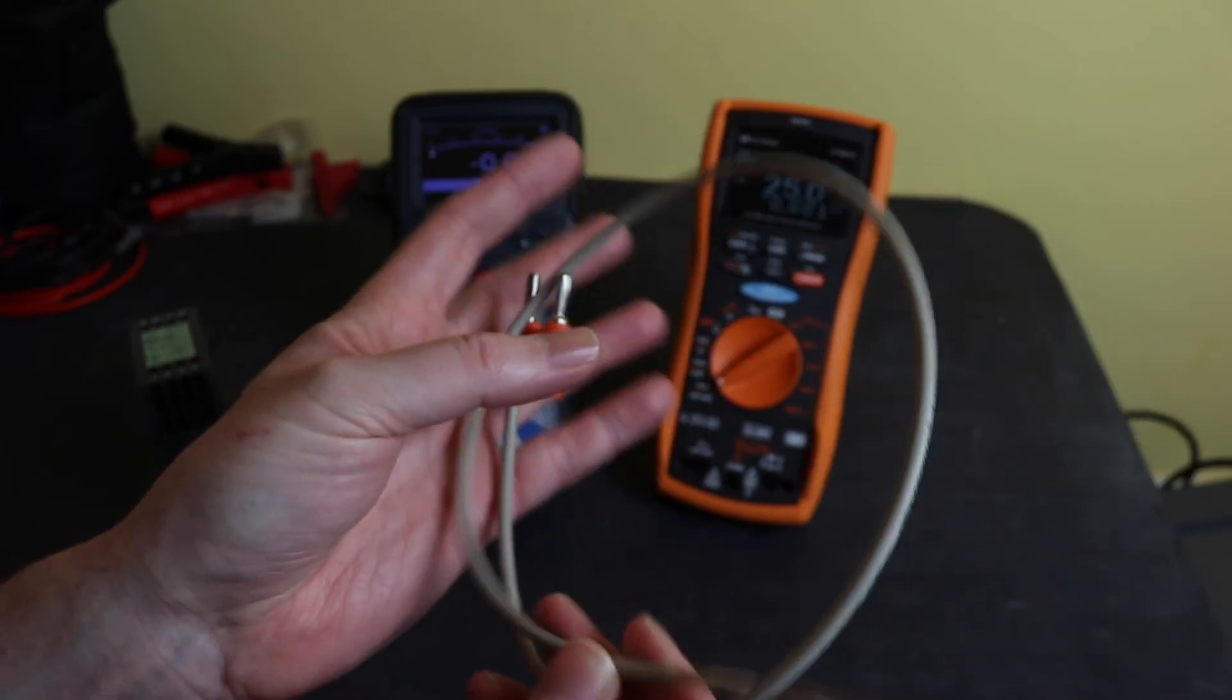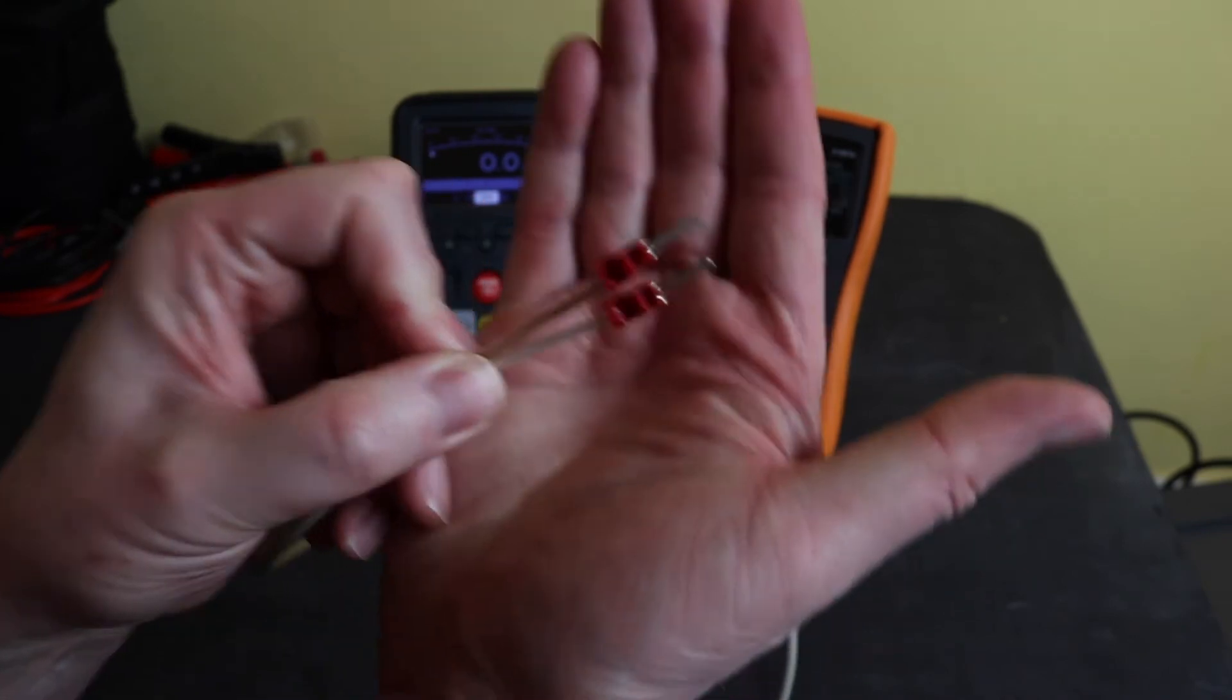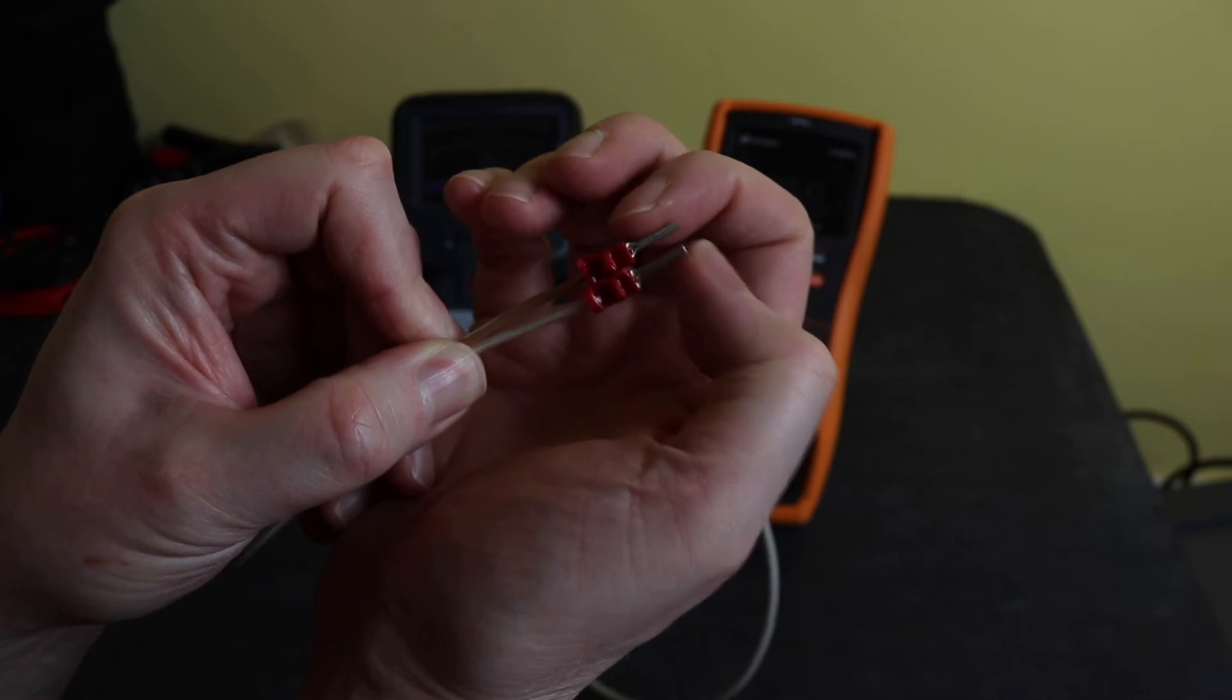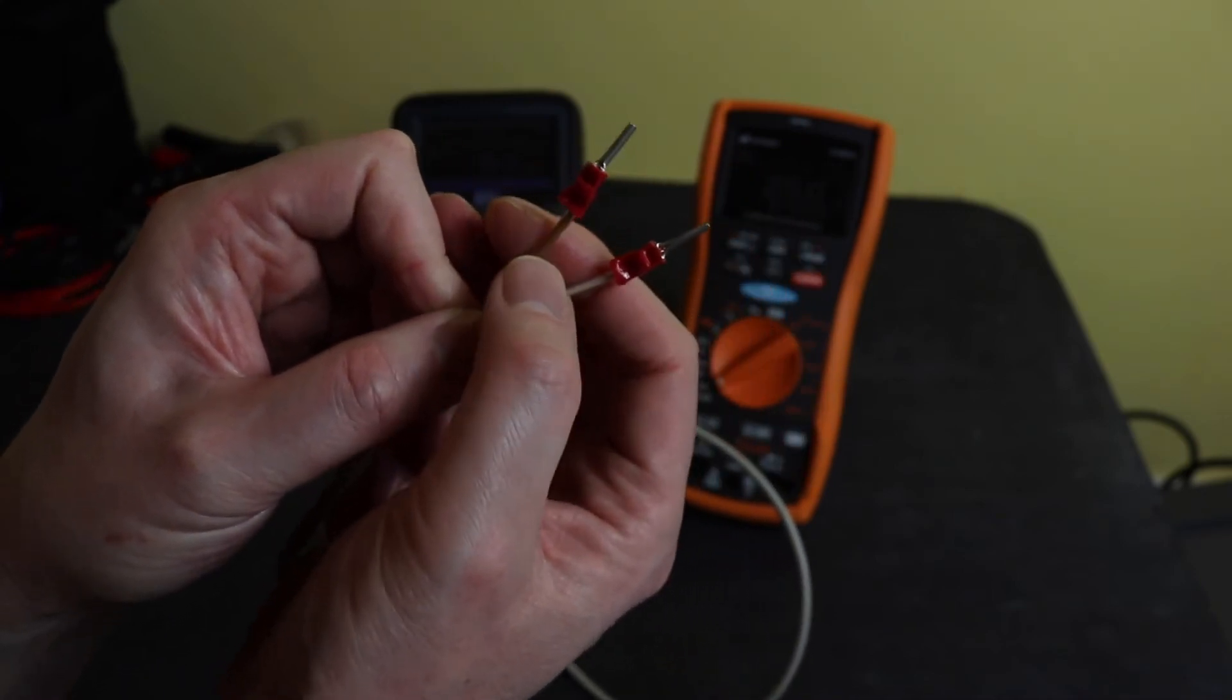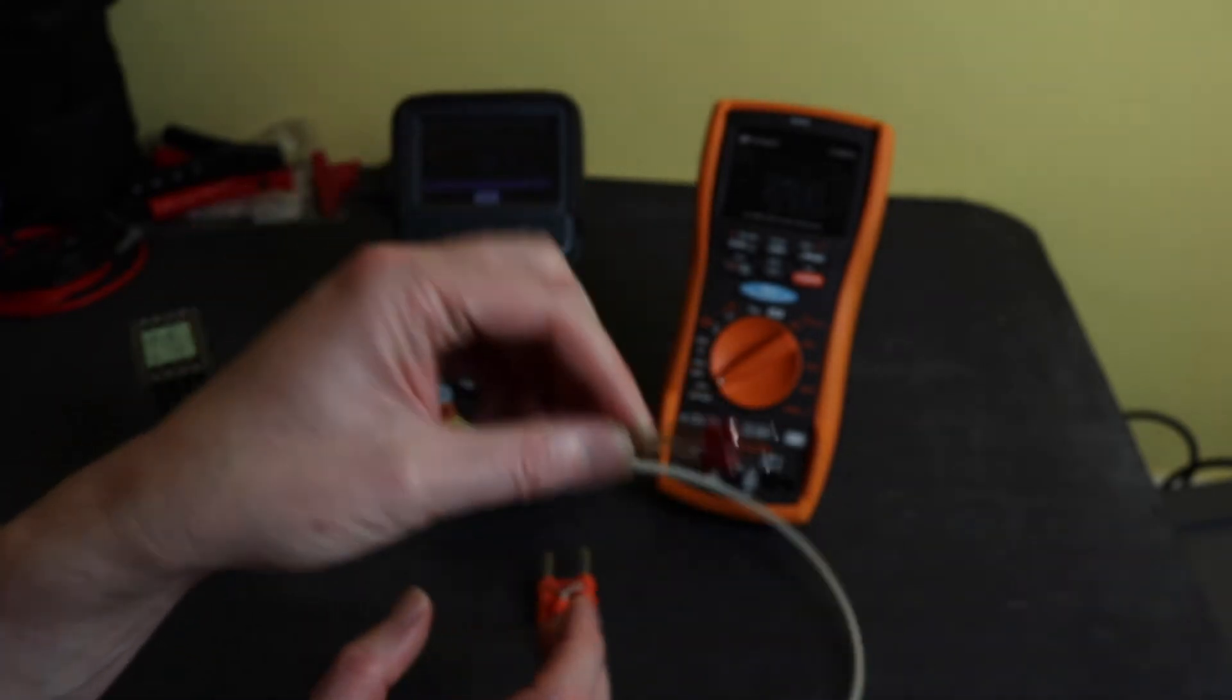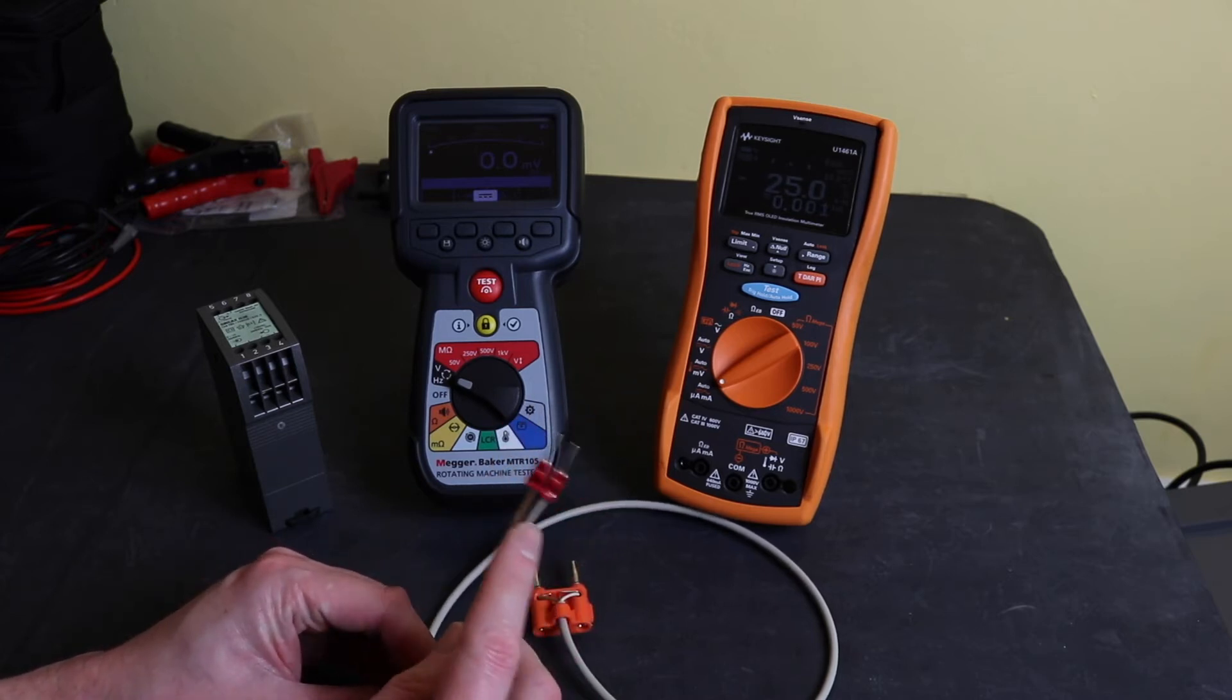Just a bit of standard two core flex and at this end I've used a couple of red crimps there. For this kind of test setup I like to use these pin crimps. You can put ferrules on the end of the lead, standard ferrules, but I find they're quite weak.